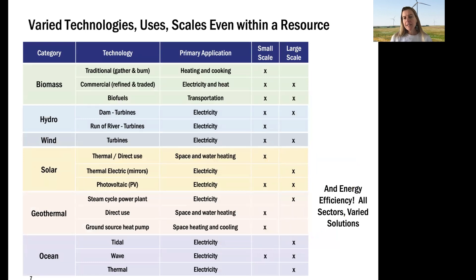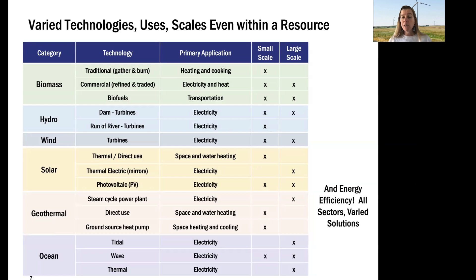Some renewables are really used for electricity only — that's hydro, wind, and ocean resources. But some are used in a variety of ways. Biomass can be used in any way we use fossil fuels today: heating, cooking, lighting, electricity production, and transportation. Geothermal is a heat resource — we can use it for heat or electricity, same with solar. We can take that solar resource and make heat, or use it for electricity, all at different scales. Energy efficiency can be used all across our energy systems.